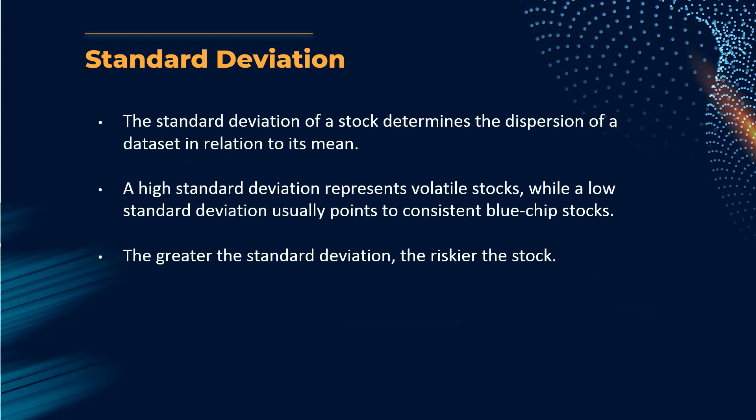The standard deviation of a stock determines the dispersion of a data set in relation to its mean or stock price. A high standard deviation represents volatile stocks, while a low standard deviation usually points to consistent blue-chip stocks. The greater the standard deviation, the riskier the stock. Again, this is just for revision purposes.